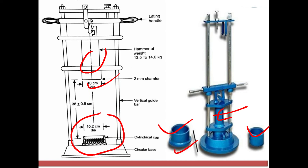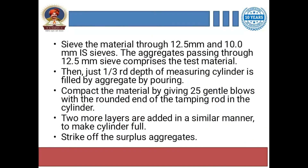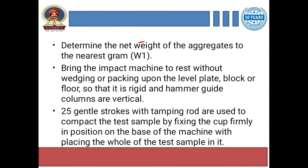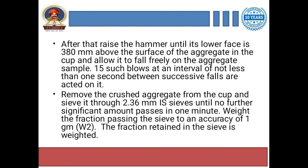For the impact value procedure: collect material passing through the 12.5 mm sieve and retained on the 10 mm sieve, and put it in the measuring cylinder. Fill the cylinder in one-third increments with 25 gentle blows each time. Record the total weight as W1. Then raise the hammer to 380 mm height and provide 15 blows to the aggregate sample in the cylindrical cup.